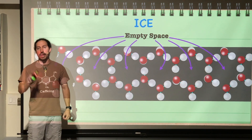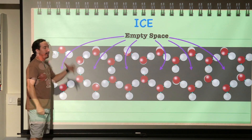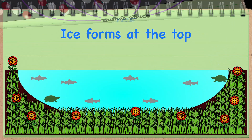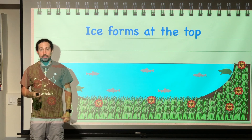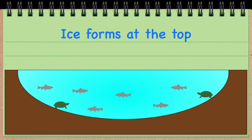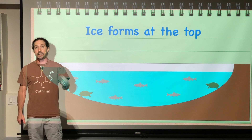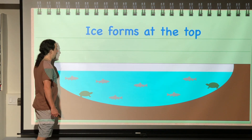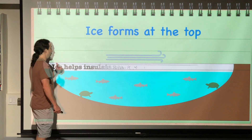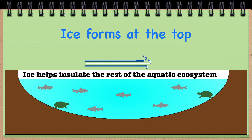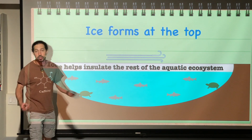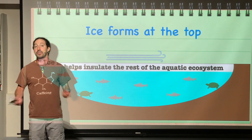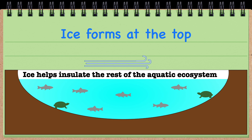Because of that empty space, ice is less dense than its liquid equivalent. This also means that ice forms at the top of a lake, stream, or aquatic ecosystem during winter months. That's crucial for the survival of the ecosystem: the ice provides an insulating force from the wind, preventing the entire body of water from freezing solid all the way down, which would kill the organisms living there. Ice actually helps insulate the rest of the aquatic ecosystem.